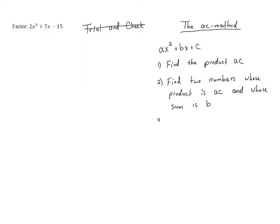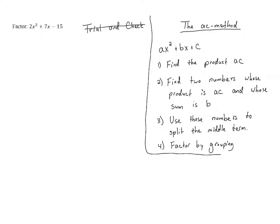But we're going to do something different with these numbers. Once we find these numbers, we're going to use these numbers to split the middle term, which will make more sense when we look at an example. And once we've done that, we're going to finish factoring by grouping. These are the instructions for the AC method.